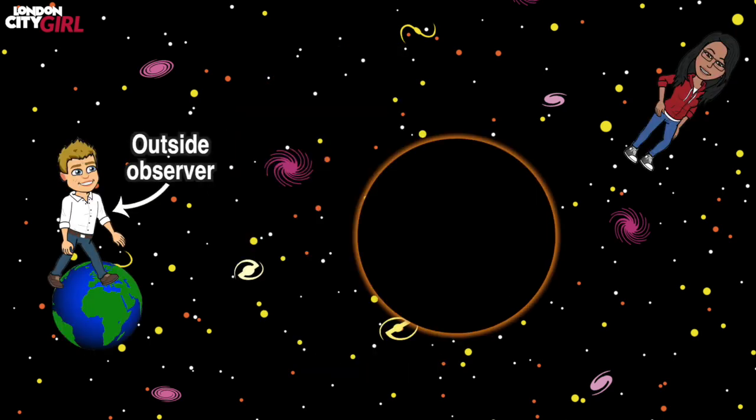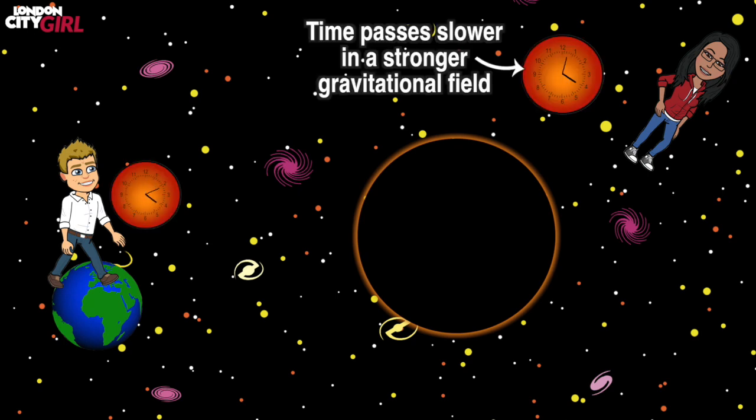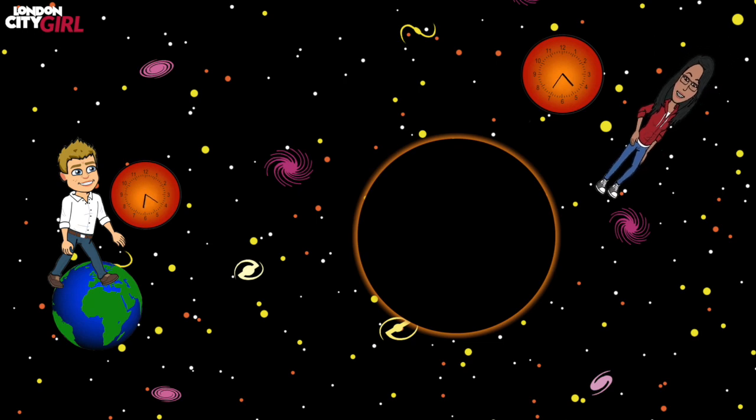For an outside observer, they would never actually see you cross the event horizon into the black hole. Einstein's theory of relativity describes time as being relative. It is not the same for everyone. Incredible though it sounds, time passes slower in a stronger gravitational field relative to a weaker gravitational field. So when you are at the event horizon, an observer from a distance will actually never see you cross the event horizon, as your time will appear to stop altogether. To them, you will remain at the event horizon forever.